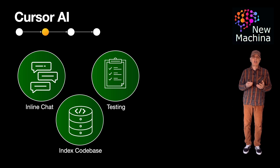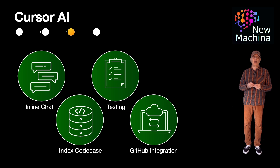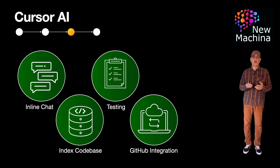Cursor AI also has support for Git integration. You can generate commit messages, explain diffs, or even generate PR descriptions.